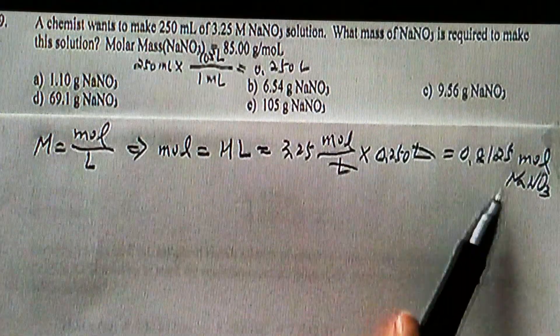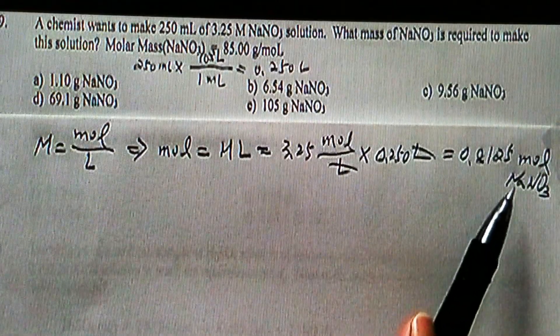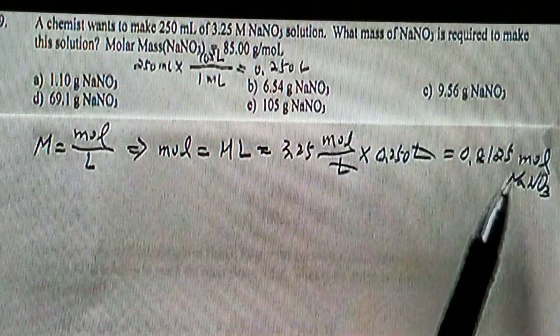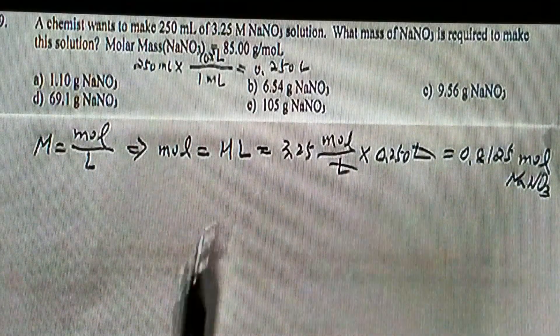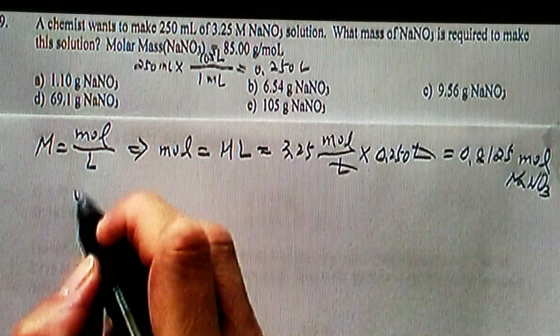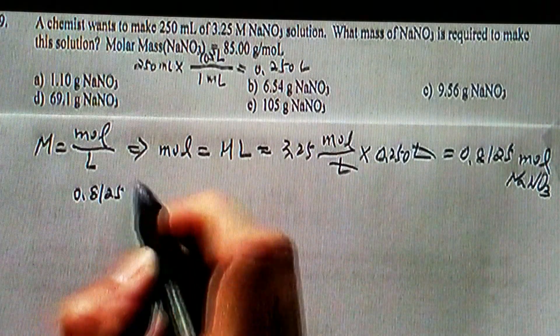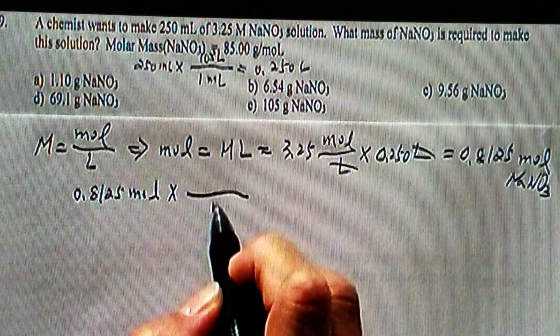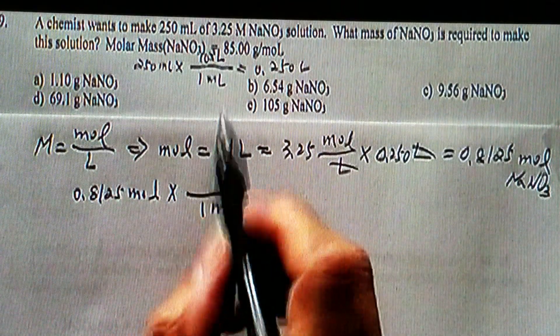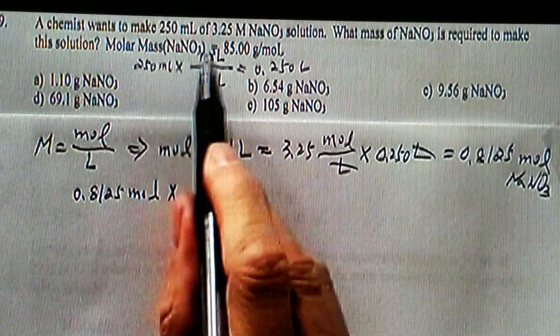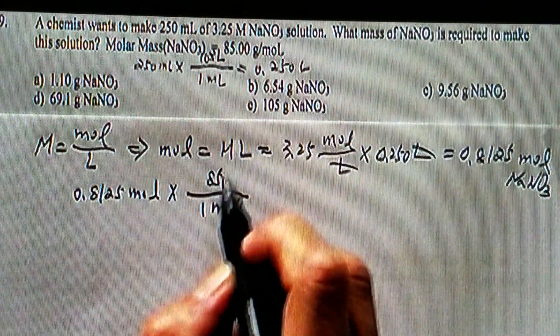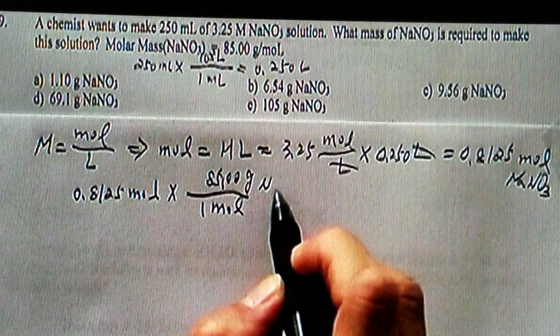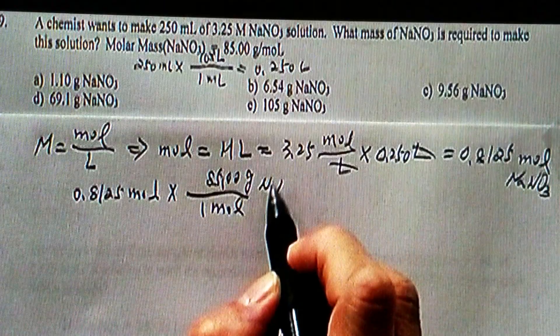Now we found out the moles. And what is asked is the mass. Then we simply convert it from moles to grams. 0.8125 moles, converting from one mole to the molar mass of sodium nitrate, 85.00 grams. And of course, we are talking about sodium nitrate.